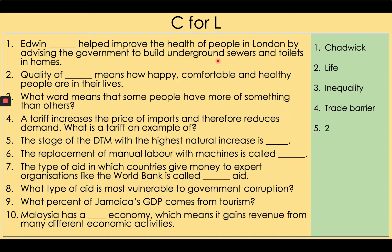Six: the replacement of manual labour with machines is called mechanisation. Seven: the type of aid in which countries give money to expert organisations like the World Bank is called multilateral aid. Eight: what type of aid is most vulnerable to government corruption? It is usually bilateral aid. Nine: what percent of Jamaica's GDP comes from tourism? It's about 30 percent. Ten: Malaysia has a diversified economy, which means it gains revenue from many different economic activities.